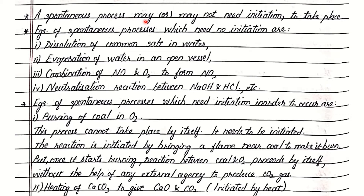A spontaneous process may or may not need initiation to take place. Examples of spontaneous processes which need no initiation are: dissolution of common salt in water — the moment you add sodium chloride in water, it starts dissolving immediately; evaporation of water in an open vessel; combination of nitric oxide and oxygen to form nitrogen dioxide; and neutralization reaction between sodium hydroxide and hydrochloric acid. These processes take place spontaneously without needing to be initiated.